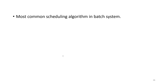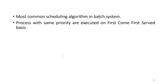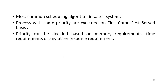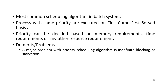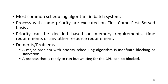It is most commonly used scheduling algorithm in batch operating systems. Processes with the same priority are executed on a first come first serve basis. Priority can be decided based on memory requirements, time requirements, or any other resource requirement. A major problem with priority scheduling algorithm is indefinite blocking or starvation, and a second demerit is that a process that is ready to run but waiting for the CPU can be blocked.